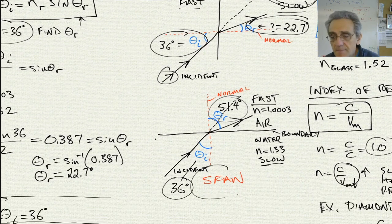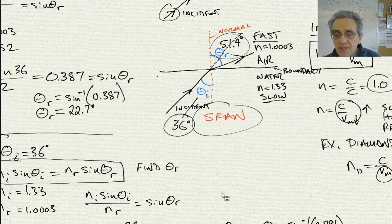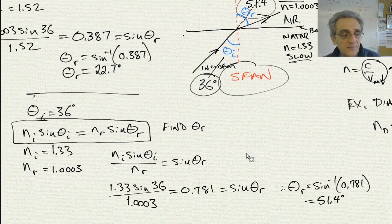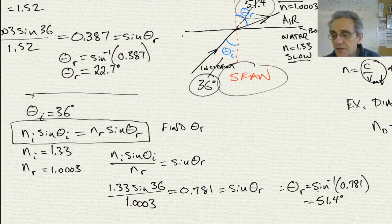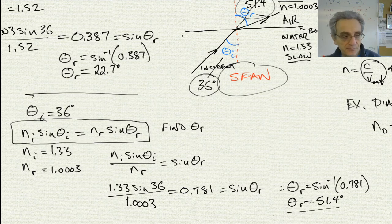Notice that 51.4° is bigger than 36°, whereas before 22.7° was smaller than 36°. This is the difference between FSTN — fast to slow — versus SFAN — slow to fast. Now you've seen a couple of examples of using Snell's Law to calculate the refracted angle. The math is very straightforward. See you next time.